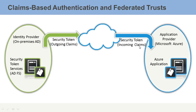From the perspective of the application provider it's an incoming claim, but from the perspective of the Active Directory environment it's an outgoing claim. It's still just identity information — you are claiming to be this particular identity. The application provider accepts that and then determines if this is an authenticated request.